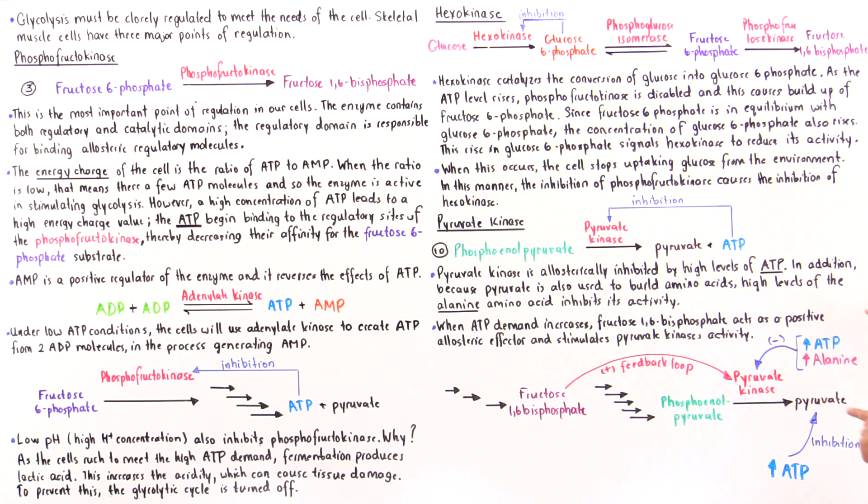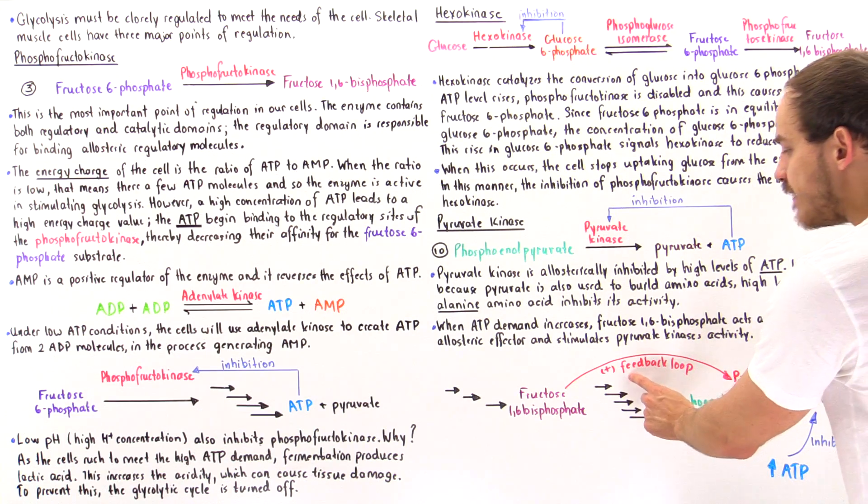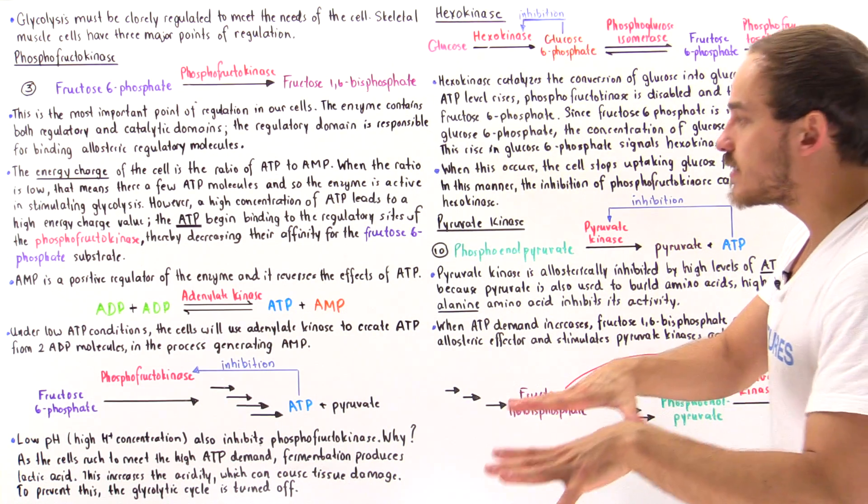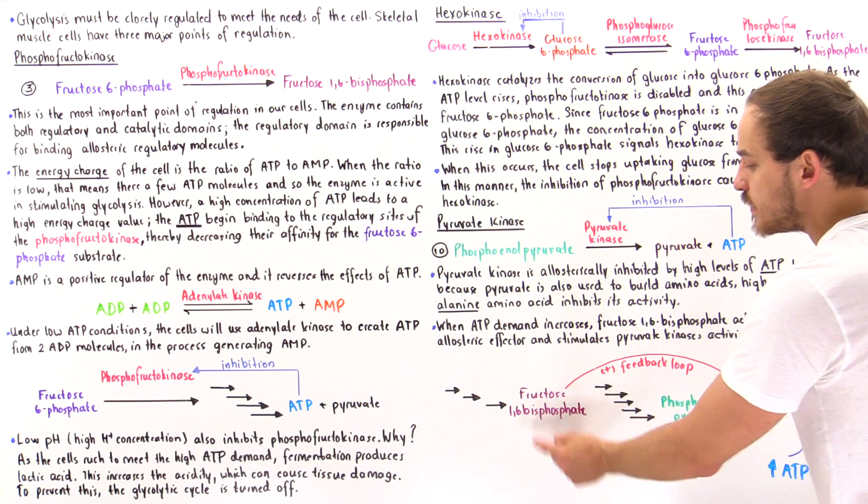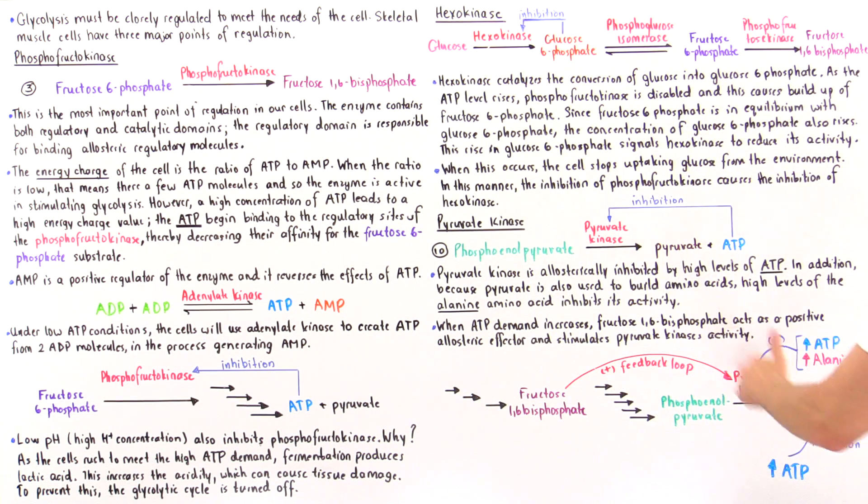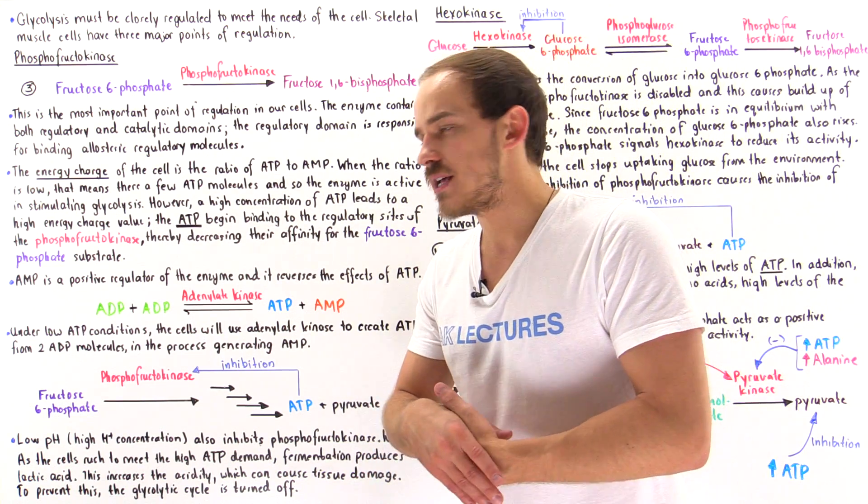So if we look at this process, we see that increase in the concentration of ATP or alanine can cause a negative feedback loop and inhibit the activity of pyruvate kinase. But if we have low amounts of ATP, that means we'll have high amounts of fructose 1,6-bisphosphate, which creates a positive feedback loop and stimulates the pyruvate kinase to carry out its process.